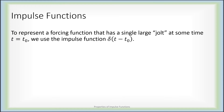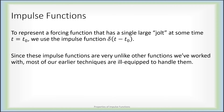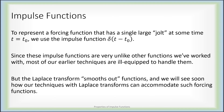To represent a forcing function that has a single large jolt at a time other than zero, we take a shifted version of the impulse function. These are very unlike other functions we've worked with, so techniques like variation of parameters or the method of undetermined coefficients can't handle them well. But the Laplace transform smooths out functions, and we'll see it is very well equipped to handle impulse forcing functions.